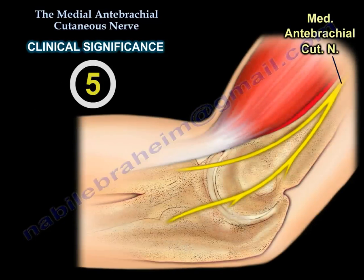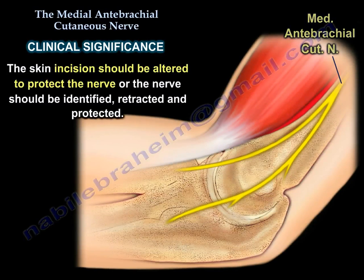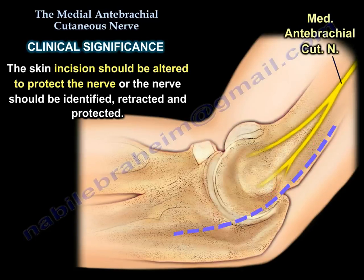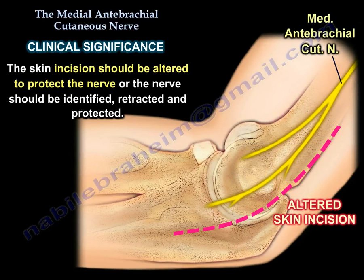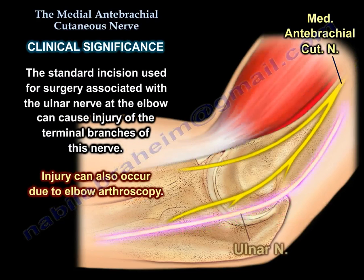Number 5: Care should be taken when dissecting around the elbow. The skin incision should be altered to protect this nerve; otherwise the nerve should be identified, retracted, and protected. Sacrifice of the posterior branch in the medial approach to the elbow or from cubital tunnel surgery can lead to numbness and asymptomatic neuroma. Neuroma may need to be explored and buried. The standard incision used for surgery associated with the ulnar nerve at the elbow can cause injury of the terminal branches of the nerve. This injury can also occur from elbow arthroscopy.